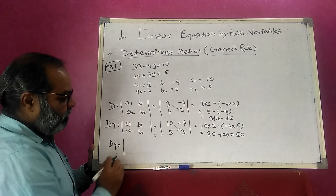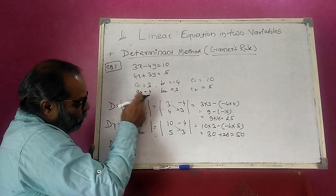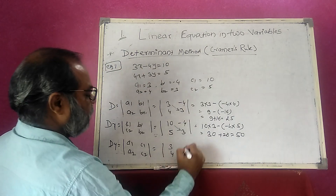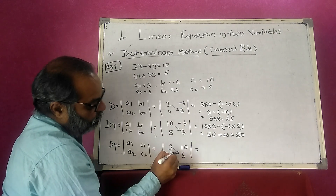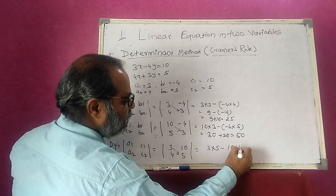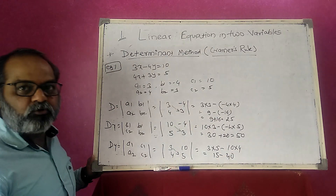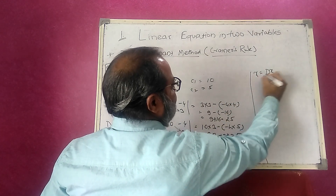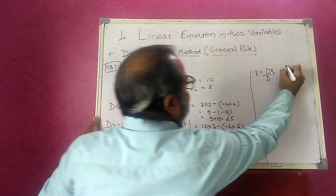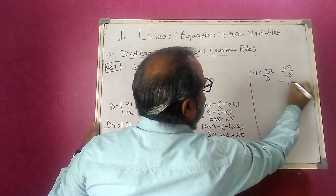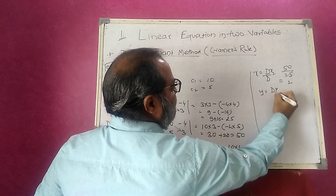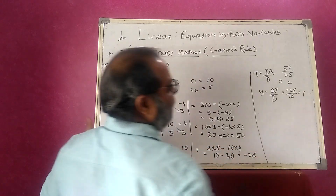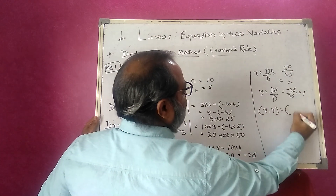Finding Dy: keep a₁, a₂ as [3; 4] and replace b₁, b₂ with c₁, c₂ = [10; 5]. Cross multiply: 3×5 = 15, minus 10×4 = 40. So Dy = 15 minus 40 = minus 25. The solution: x = Dx/D = 50/25 = 2. And y = Dy/D = minus 25/25 = minus 1. So the solution is x = 2, y = minus 1.